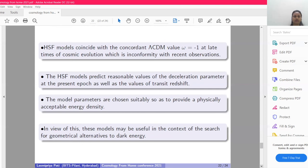We found the hybrid scale factor models coincide with the concordance Lambda CDM value ω equals minus 1 at late times of cosmic evolution, which is in conformity with recent observations. The hybrid scale factor models predict reasonable values of the deceleration parameter at the present epoch as well as the value of transit redshift. The model parameters are chosen suitably to provide physically acceptable energy density. In view of this, these models may be useful in the context of the search for geometrical alternatives to dark energy.